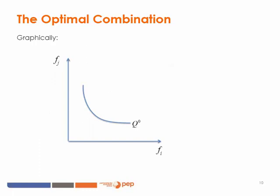Back on our graph, this means that the relative prices should be equal to the slope of the isoquant, since at the optimum the relative prices should equal the marginal rate of technical substitution, which is also equal to the slope of the isoquant. At this point of tangency, we find the optimal quantities the producer should use in order to produce Q0, given relative prices WI and WJ. The optimal quantity of each input is shown here as FI star and FJ star.